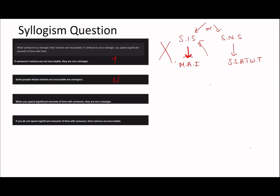'When you spend significant amounts of time with someone they are not a stranger.' This is a really weird one. In the official answers the answer is no, and I think this is the A→B, B→A trick. We said if someone's not a stranger you spend significant time with them, but just because you spend significant time with someone does not necessarily make them not a stranger. The arrow isn't going the right way. Just because the scenario changes doesn't mean the arrow principles change, so the answer is no. It's a bit of a tricky one.